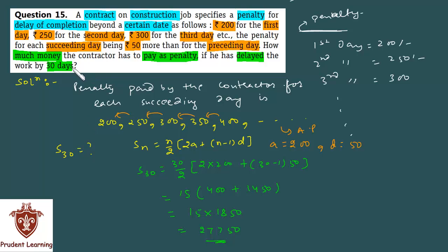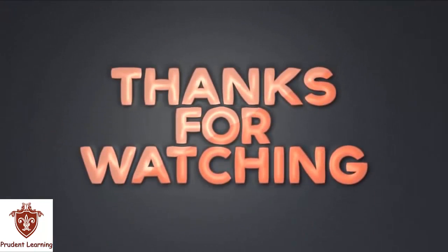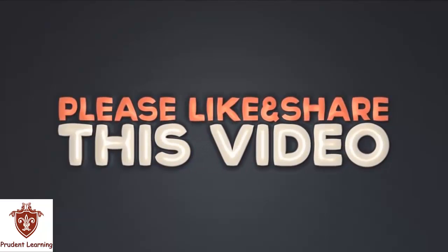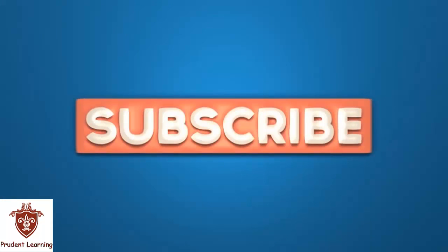तो finally उस contractor को 30 days के delay के लिए 27,750 रुपए pay करने होंगे। I hope question आप समझ गए होंगे। अगर कहीं पर problem है तो वीडियो को दुबारा देख लीजिए, और still problem है तो वीडियो के नीचे comment करके convey कर सकते हैं।